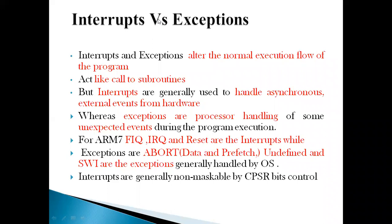Those are referred to as interrupts, whereas exceptions are the processor's handling of unexpected events during program execution itself. For example, if I am running a program in C with a loop doing division and suddenly there is a division by zero, that invokes an exception. It is something coming unexpectedly from the application or system itself and is handled by the system itself.